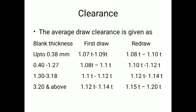Next we talk about clearance — the clearance between punch and die dimensions. The average draw clearance is a function of blank thickness. If blank thickness is up to 0.38 mm, for the first draw the clearance between punch and die is 1.07t to 1.09t — meaning an average of 1.08 times the thickness of the sheet metal. Similarly, for redraw the clearance will be 1.08 to 1.10 times the thickness. As blank thickness varies, the clearance can be read from the table on screen and used when designing the punch and die.